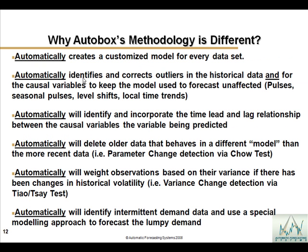Why is AutoBox different? It creates a different model for each data set and will identify and correct for four types of outliers: pulses, seasonal pulses, level shifts, and local time trends. If you don't account for those, it will skew your model and forecast. AutoBox will also identify the lead and lag relationship on your causal variables, which takes econometricians days to do — and who knows if they do it right.